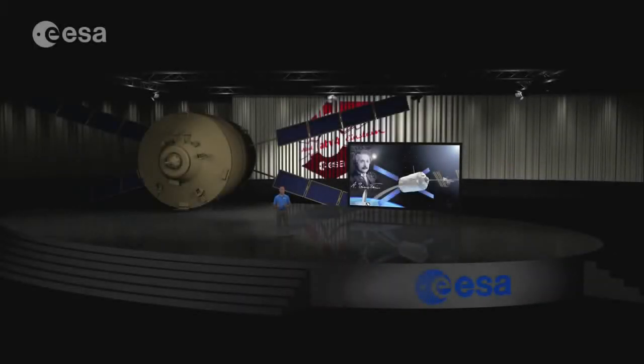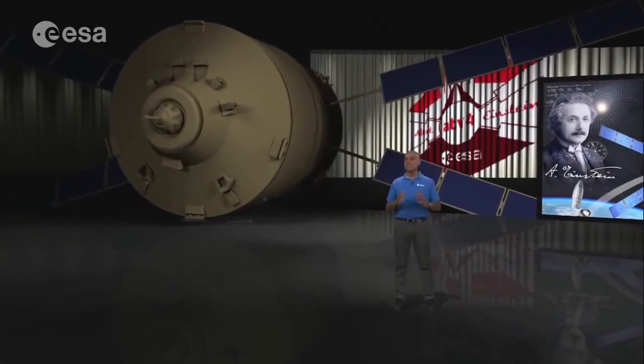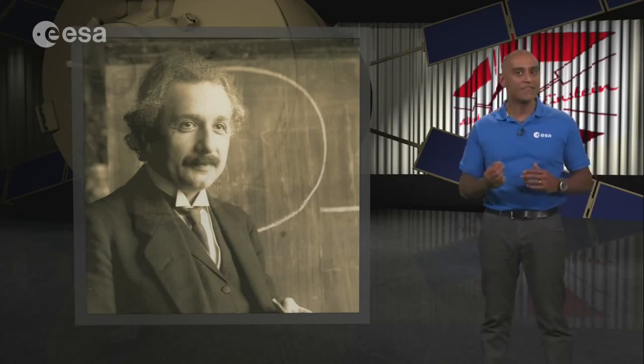If one physicist had to be selected whose speculations have most transformed our understanding of the cosmos, it would be difficult not to choose Albert Einstein. Born in 1879 in the German town of Ulm, his work on the photoelectric effect won him the 1921 Nobel Prize for Physics. Einstein's name is most synonymous with the theories of special and general relativity. But what does relativity mean from a physics perspective?